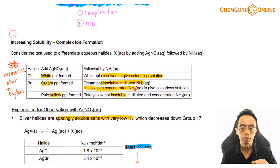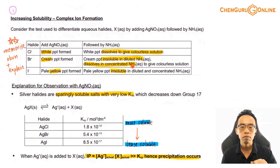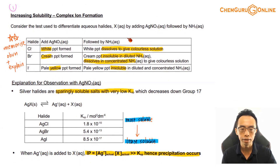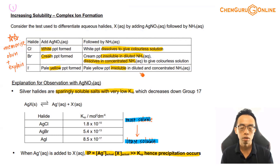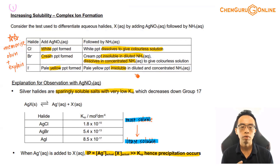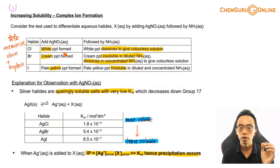The first example involving complex ion formation relates to differentiating different aqueous halides. This is probably familiar from the QA notes under the test for anions — specifically the test for chloride, bromide, and iodide. The observations can be copied from the QA notes. When you add silver nitrate: chloride gives a white precipitate, bromide gives a cream precipitate, and iodide gives a yellow precipitate.